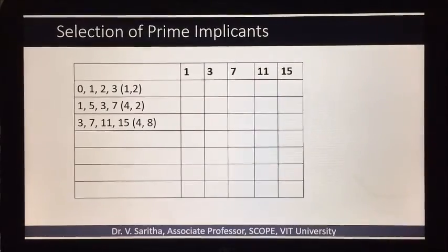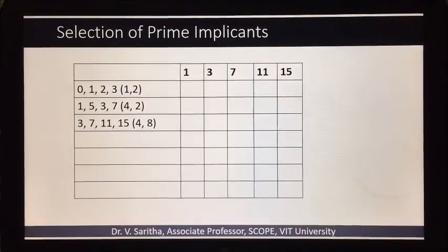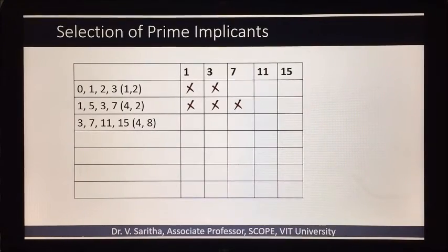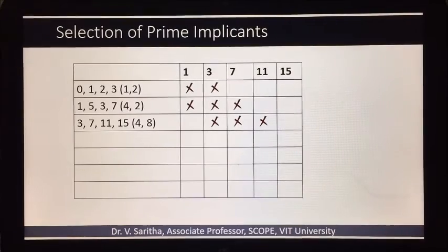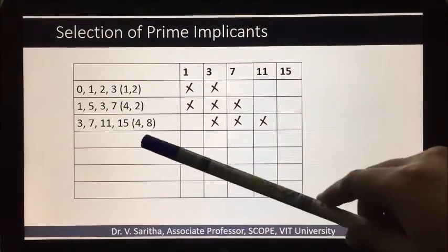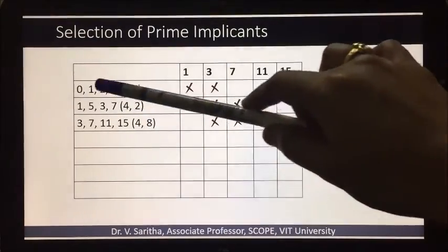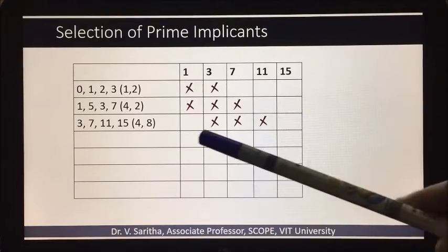These are the determined prime implicants from step 1. As usual, check the min terms given in the prime implicants. If you see 0,1,2,3: 0 and 2 are don't care conditions so we need not do anything. 1 and 3 are the min terms, so we can give cross.